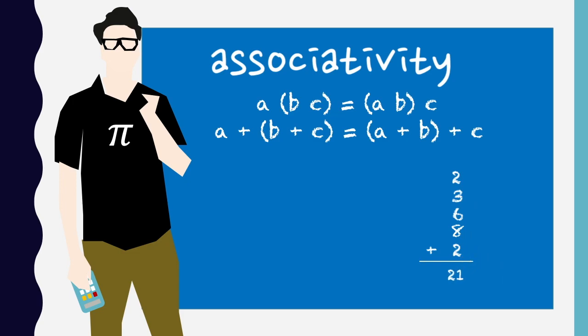So with associativity, if we want to add eight, five and nine, we can either do the eight plus five and then add nine, or we can do the five plus nine and then add the eight from the front.